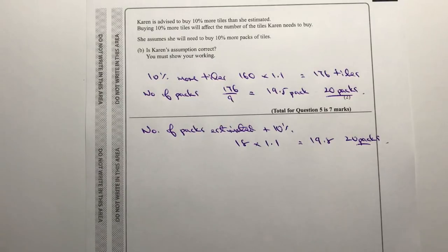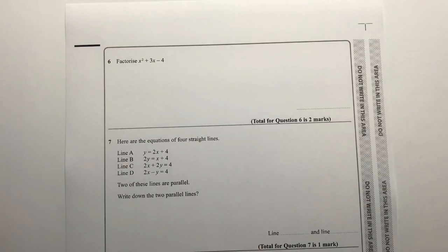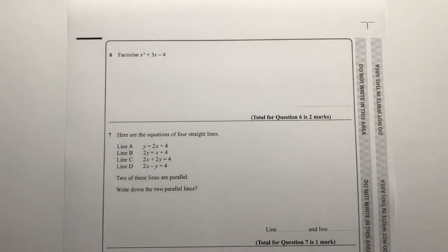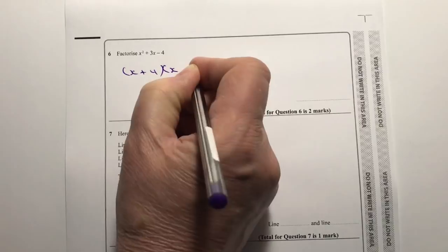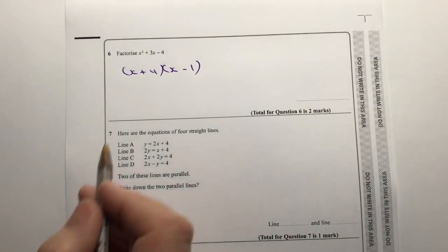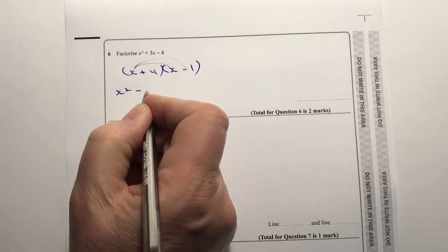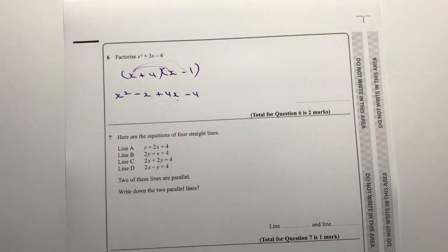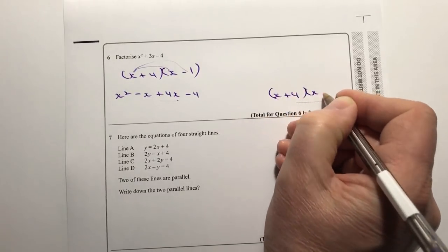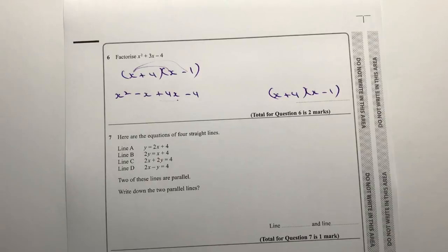Question 6 deals with factorisation — you'll have this in every exam so make sure you're comfortable with it. We need two numbers that multiply to −4 and add to +3: that's +4 and −1. So the factorisation is (x + 4)(x − 1). Checking: x² − x + 4x − 4 = x² + 3x − 4. Correct.